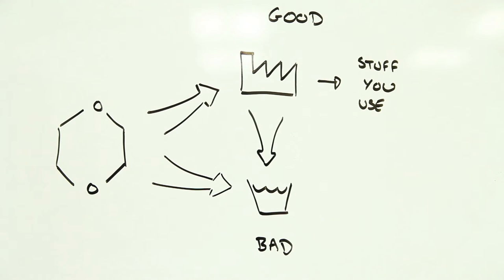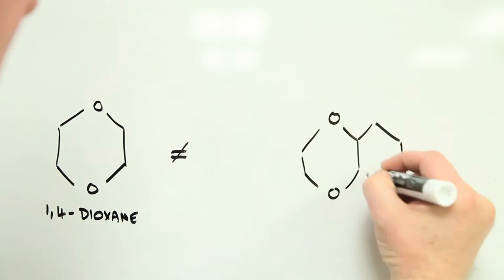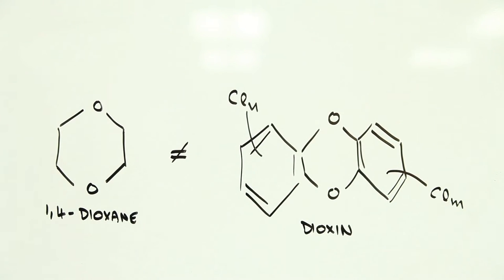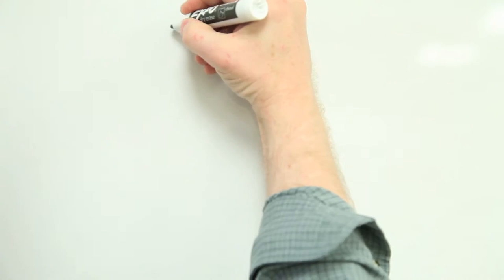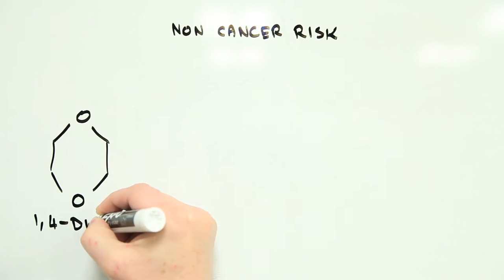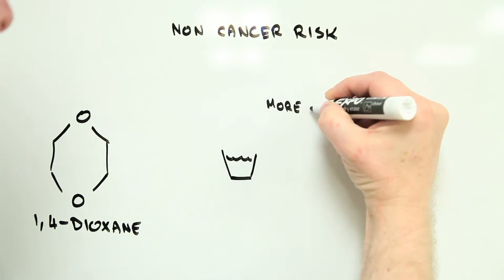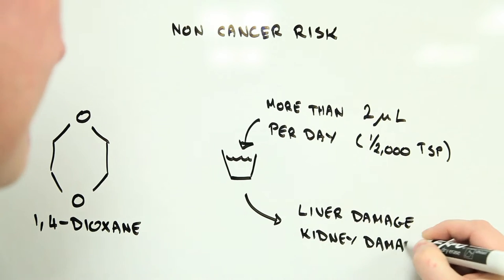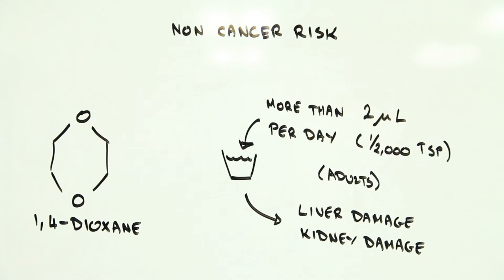According to toxicology studies, dioxane, not to be confused with the similarly named but chemically different dioxin, can damage the liver and kidneys if consumed in large quantities. However, an adult would need to be drinking a couple of microliters of the stuff every day, or around half a thousandth of a teaspoon, for serious harm to occur. This is for non-cancer health risks, though.